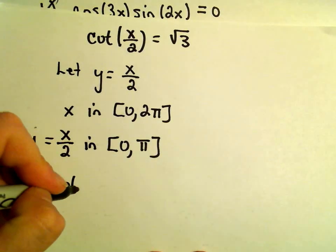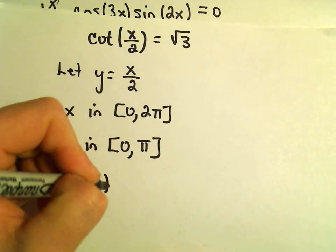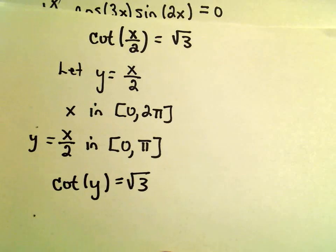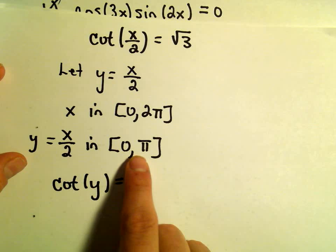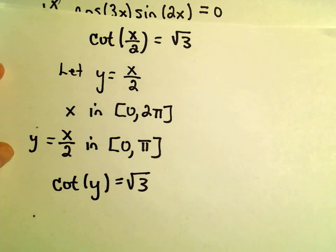So we're trying to solve equivalently cotangent of y equals square root of 3. But we only want solutions that fall in the interval 0 to pi for the value y.